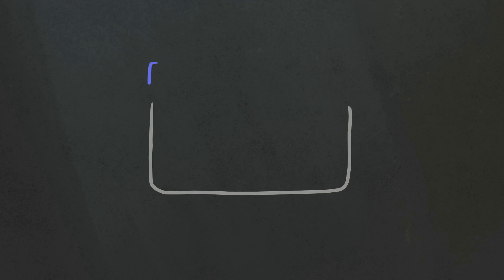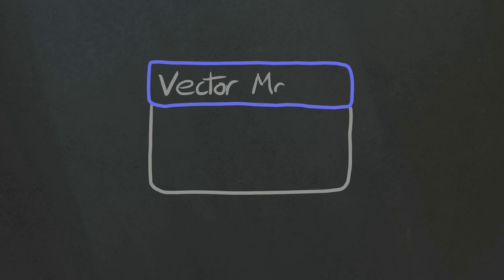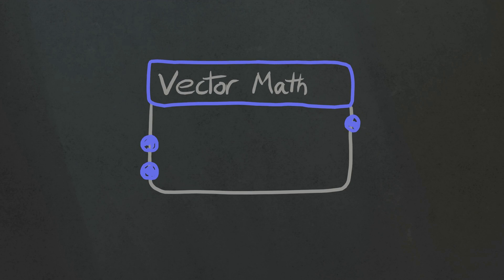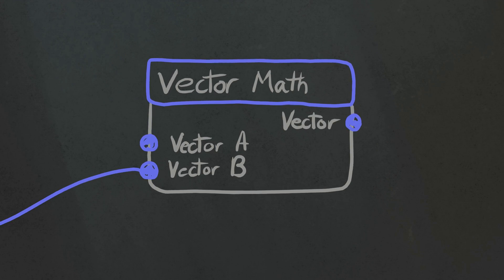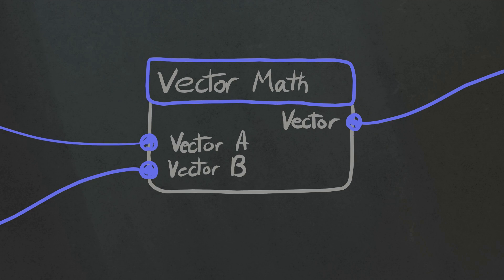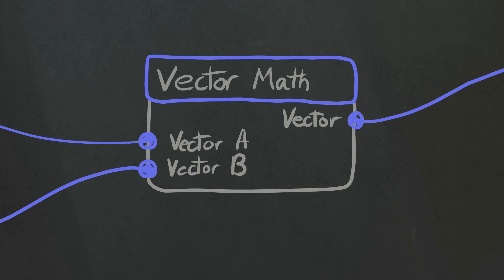Hello everyone, my name is Daniel and I'm a programmer and an artist. Today I wanted to share some thoughts I have about the vector math node, which I think is one of the most basic nodes. If you counted up how many times I've used different nodes in all of my different node setups, I wouldn't be surprised if the vector math node is the one I've used the most.